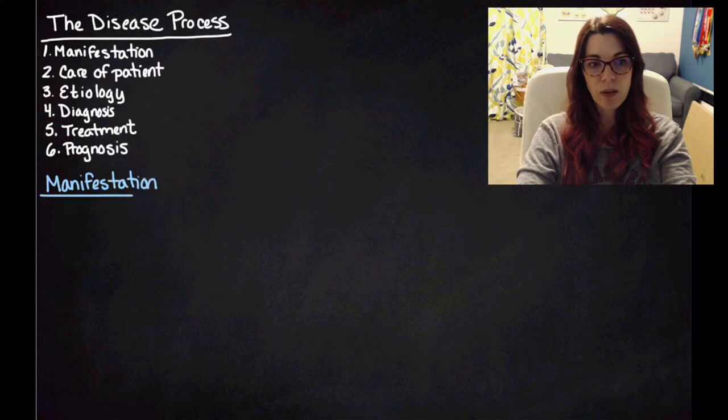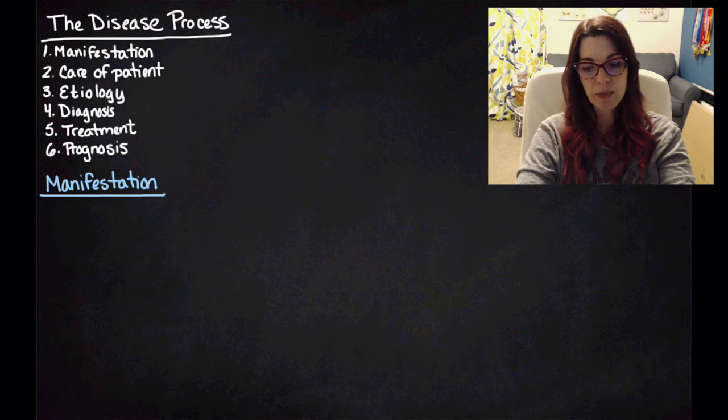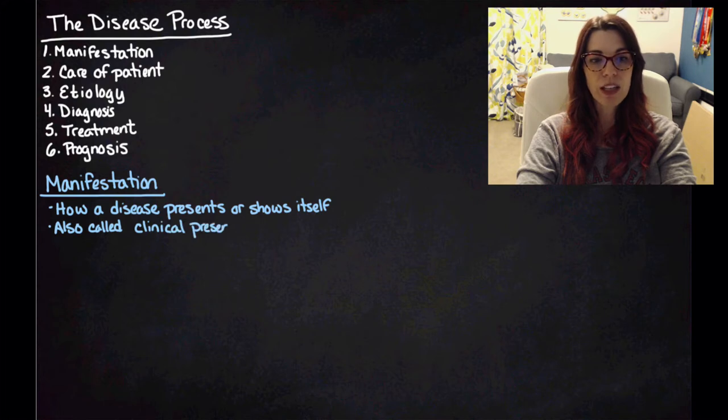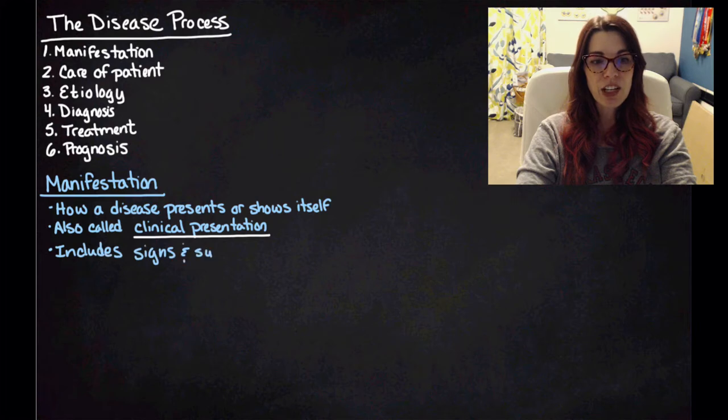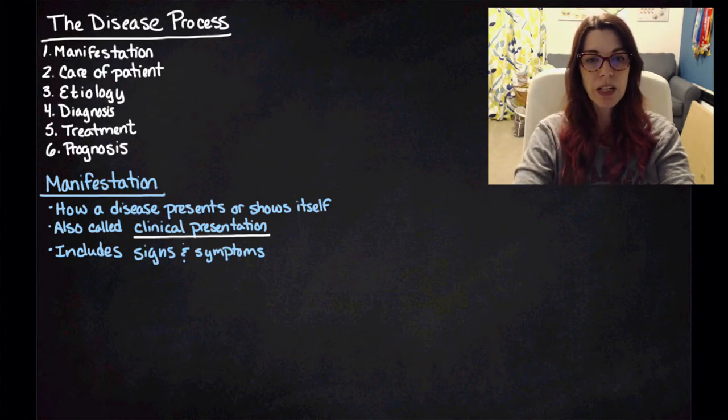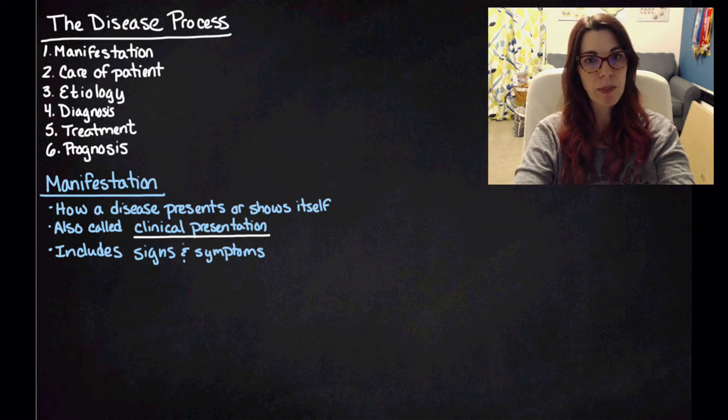So let's start with number one, which is manifestation. And let's talk about what manifestation means because it means something very specific when we're talking about disease. So manifestation is how a disease presents or shows itself. It's also sometimes called the clinical presentation. And manifestation is going to include the signs and the symptoms of the disease. We've been kind of lumping them in together and being casual about what they meant, but I actually do want to start being very specific about the difference between signs and symptoms.